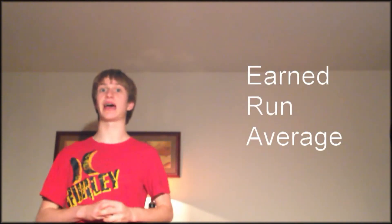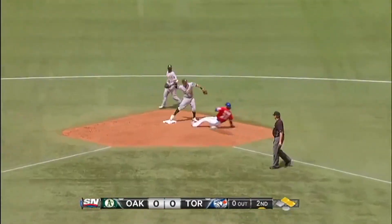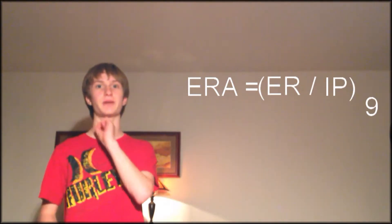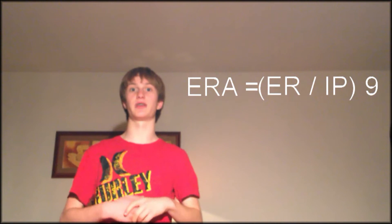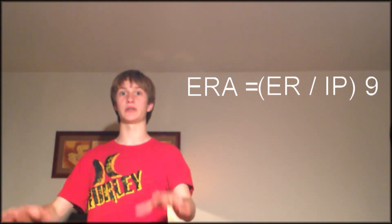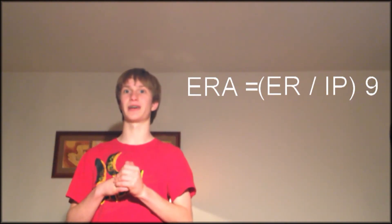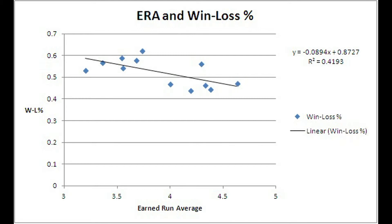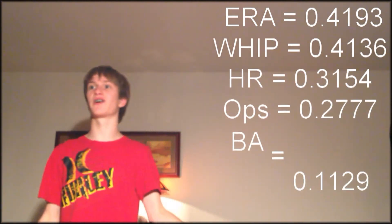Now we'll move on to our final statistic: earned run average, or ERA — one of the most commonly referred to pitching statistics, kind of like batting average for hitting. Earned run average is the average earned runs a pitcher allows per every nine innings. An earned run is any run the pitcher is directly responsible for — any run that scores besides those involving fielding errors, passed balls, or fielders' choices. To calculate ERA, take earned runs, divide by total innings pitched, and multiply by nine. A lower ERA is better. Looking at the Giants' team ERAs over the past 11 years and graphing them with win-loss percentage, there is an even higher correlation. Of all the r-squared values, ERA has had the highest.